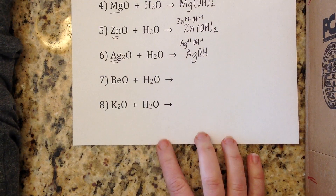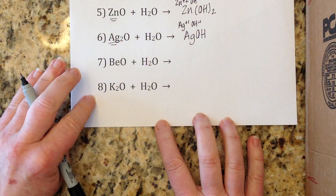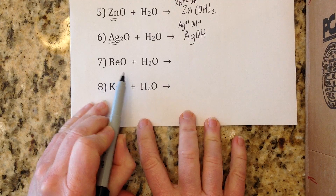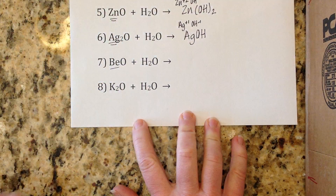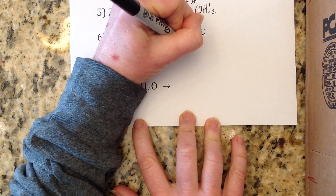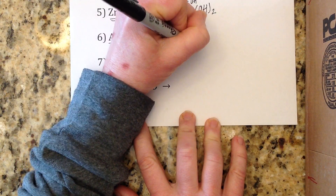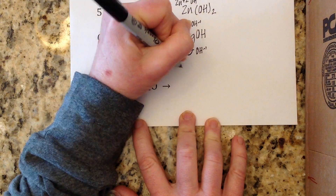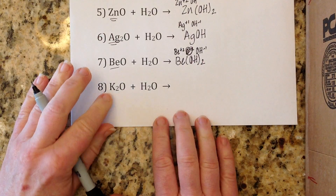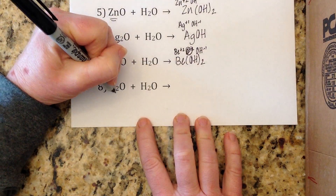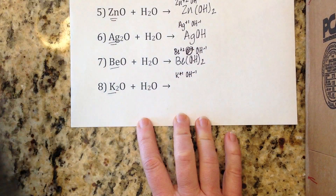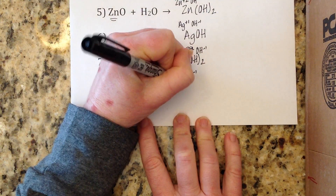You may want to pause and try the last two before seeing the answers. Number seven: beryllium oxide with water. Beryllium is the metal with a plus two charge; crisscross with hydroxide minus one and you get Be(OH)₂. Number eight: potassium oxide with water. Potassium has a plus one; hydroxide is minus one; the ones cancel and you get KOH.